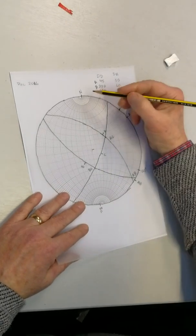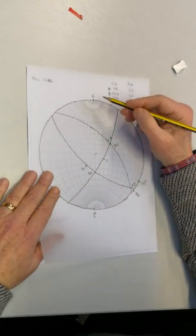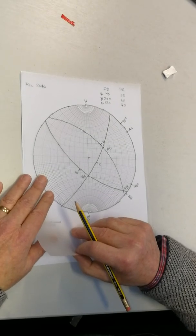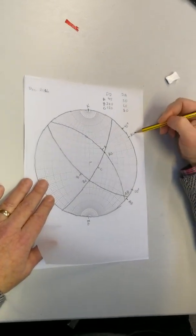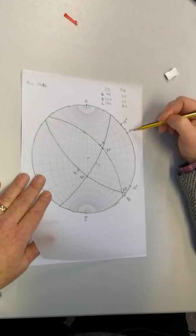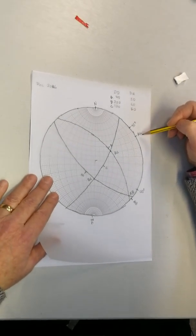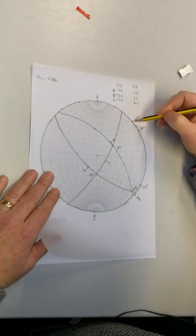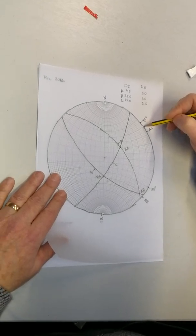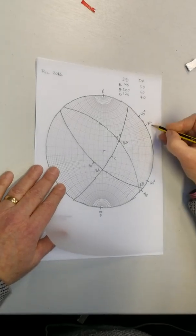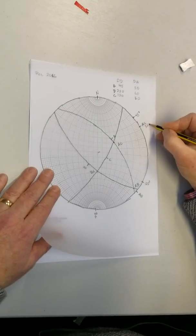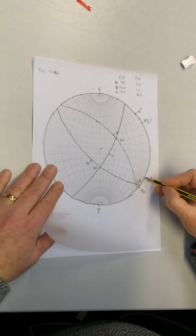Now to find the trend, I have to bring the stereo net so that the north of the stereo net lines up with the north of the tracing paper, which I've done now. And now I can go here and I can read exactly what that trend value is. So there is, if that's 45, this is 50, 52, 54, 56, 57 degrees.